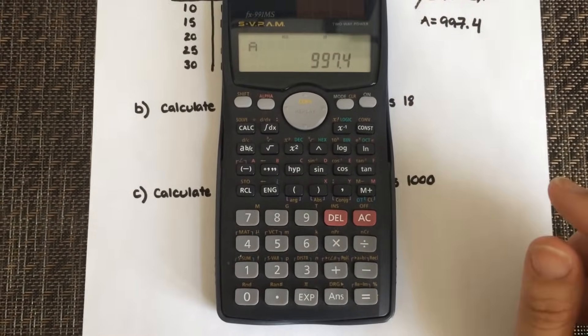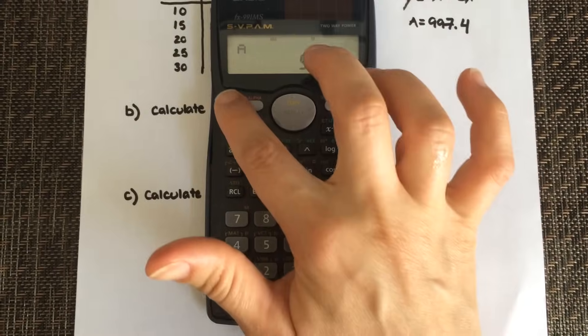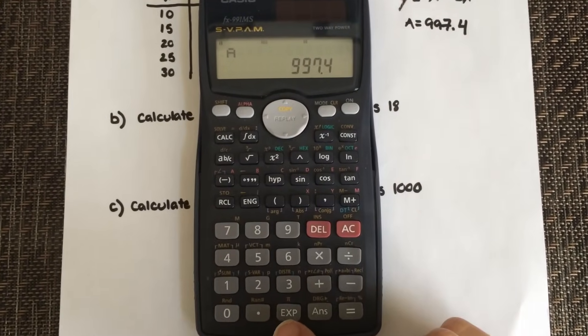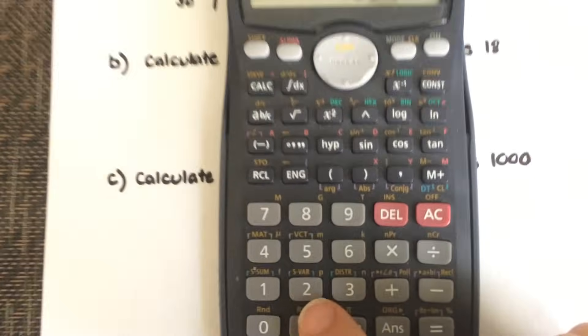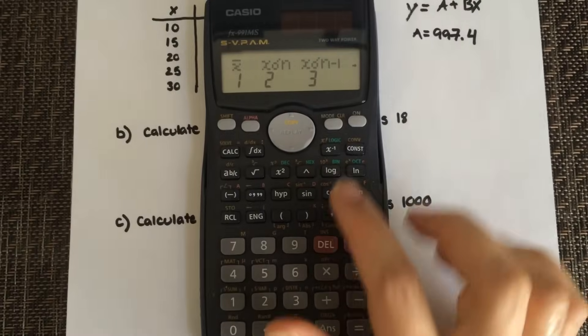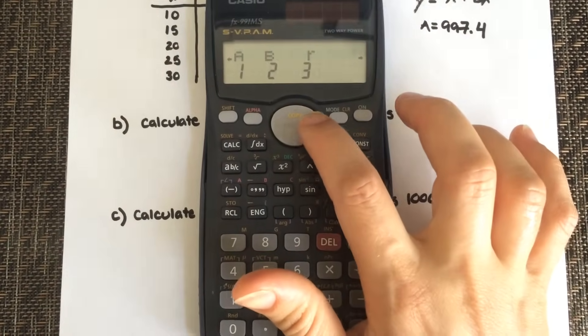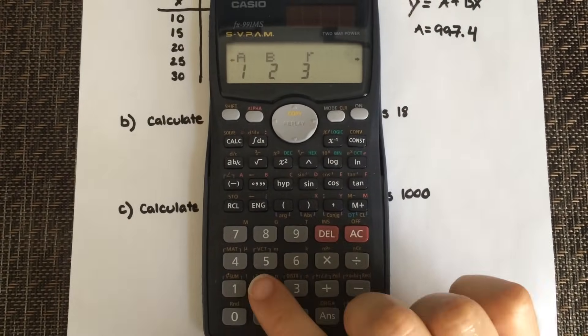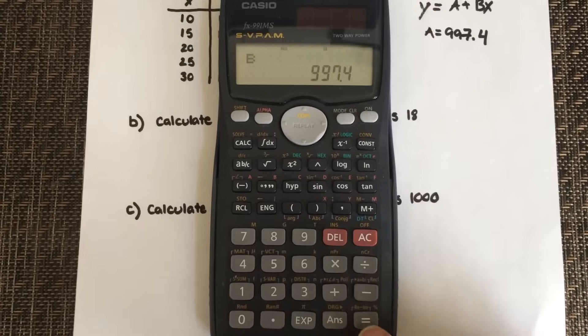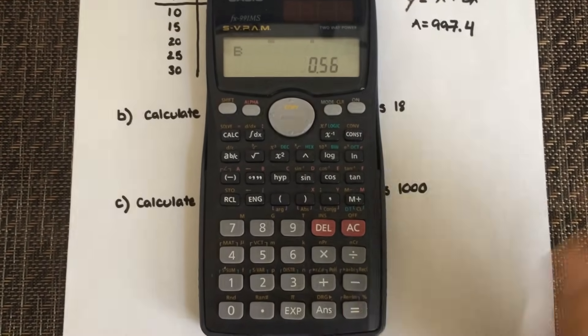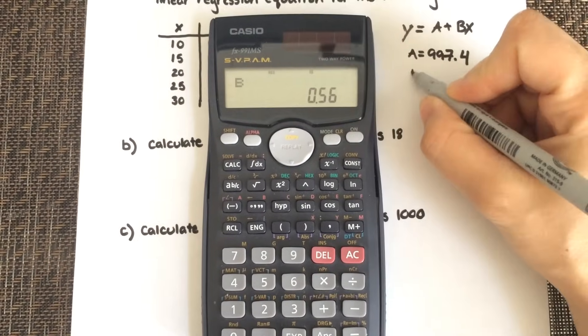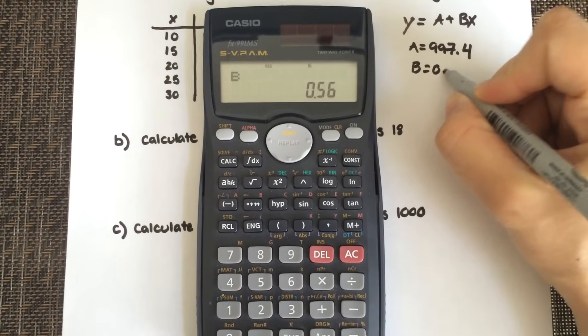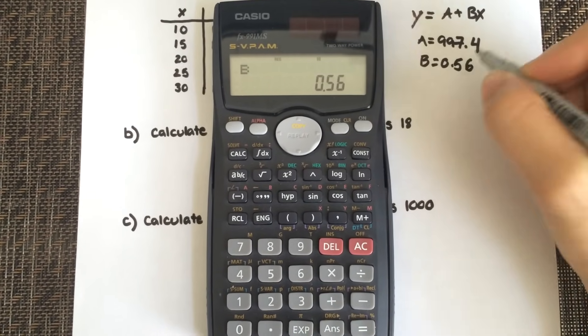So we're going to do the same thing to get b. So shift, S variable, which is the 2, and then scroll to get there. You're going to select 2 for b. Hit equals, and you have b's value. So that's your slope, 0.56.